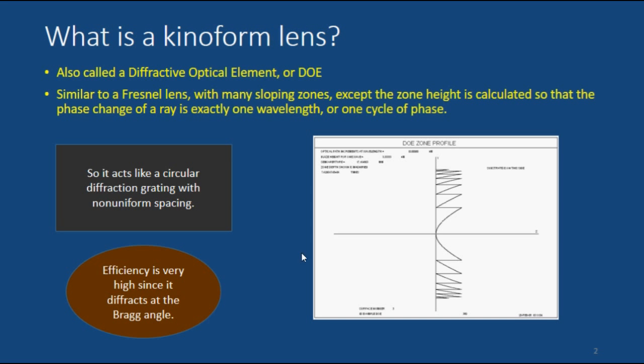Now, what's a Kinoform lens? Well, it's also called a diffractive optical element, or a DOE. It's similar to a Fresnel lens, if you've ever seen them. They're these plastic things with circular grooves and with sloping zones.